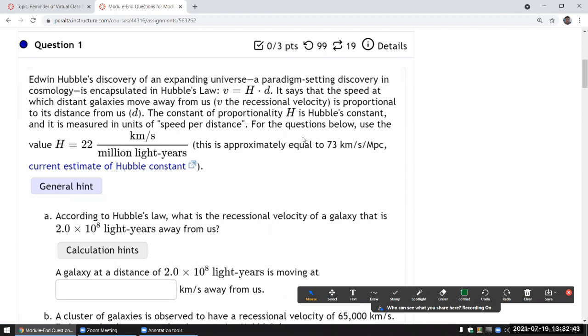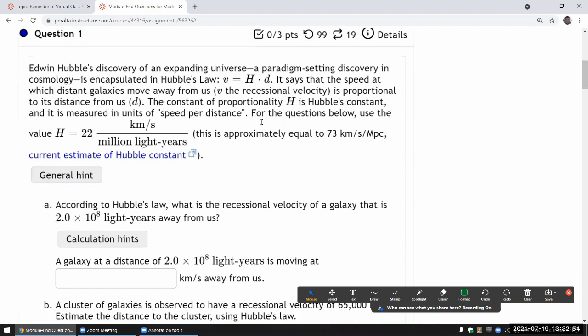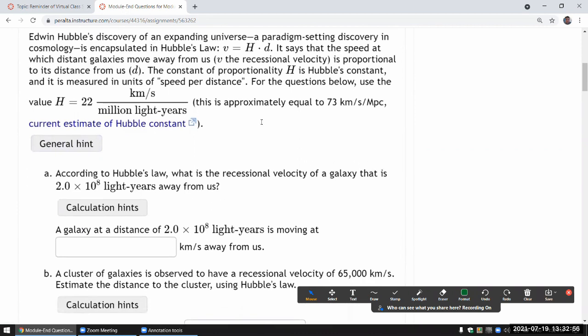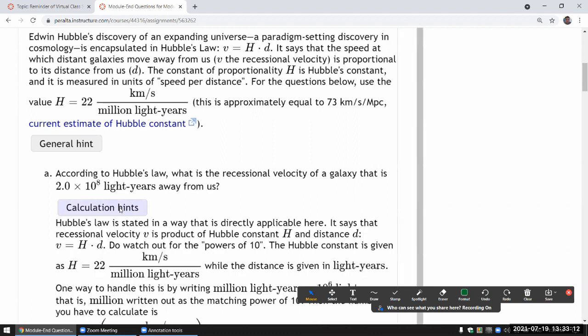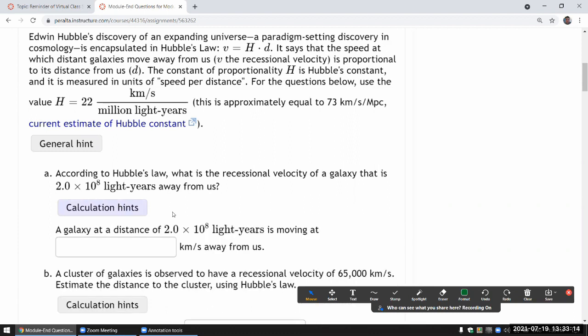In terms of calculation here, we can use this as our anchor point. So this is an observational law and we can do some example calculation based on that. So first, the question asks, according to Hubble's law, what is the recessional velocity of a galaxy that is this many distance away from us? And the hints will kind of tell you how to work through the calculation. I'll just demonstrate it.